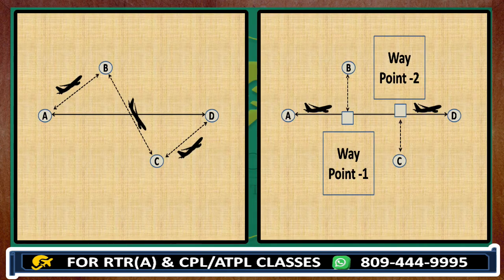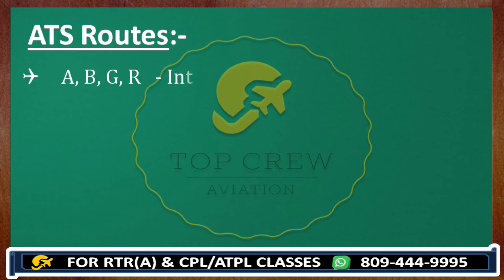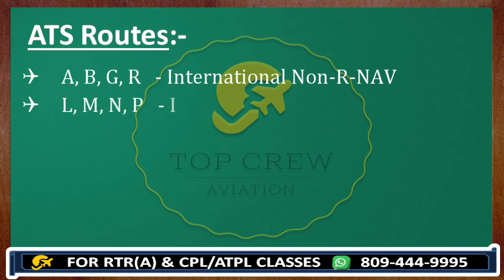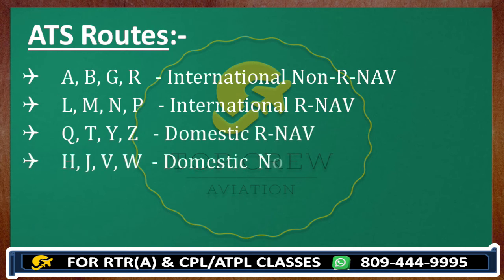We can make optimum use of routes and create more routes in parallel. If an aircraft is going to get diverted, ATC will know and call them to find out why. Right now we are using performance based navigation routes. Alpha, Bravo, Golf, Romeo — these are international non-RNAV ATS routes. Lima, Mike, November, Papa — these are the international RNAV ATS routes. Quebec, Tango, Yankee, Zulu — these are domestic area navigation routes. Hotel, Juliet, Victor, Whiskey — these are domestic non-RNAV ATS routes. In India, we have Q routes.